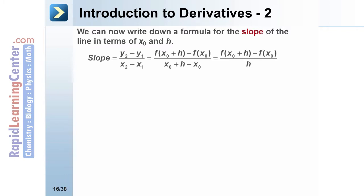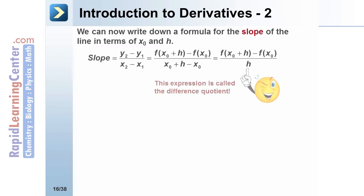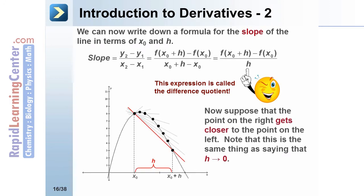We can write a formula for the slope of the line in terms of x₀ and h. Slope equals the change in y over the change in x. In the numerator we replace y₂ − y₁ with f(x₀ + h) − f(x₀), and in the denominator x₂ − x₁ becomes x₀ + h − x₀. The x₀'s cancel, leaving just h in the denominator. This expression is called the difference quotient.